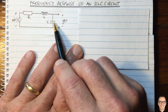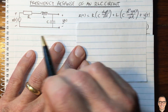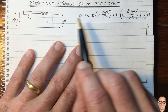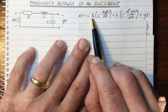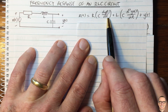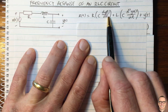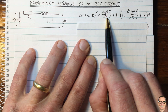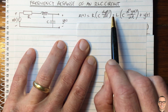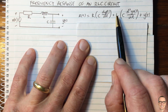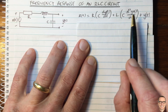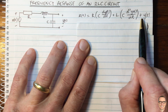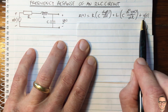We can write a KVL equation around this circuit of voltage drops, where X equals the drop around the circuit. The voltage drop across the resistor is current times resistance, and the current is the same as through the capacitor — C times the derivative of the voltage across the capacitor. The voltage drop across the inductor is L times the derivative of the current, giving a second derivative term, plus the voltage drop across the capacitor which equals Y.